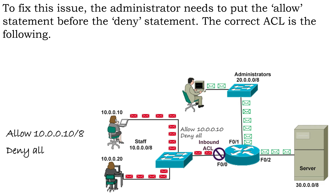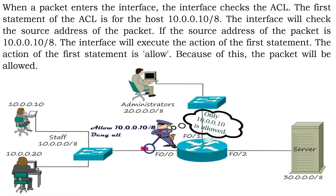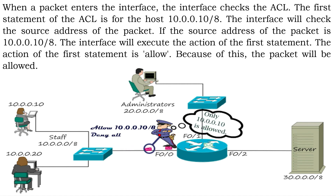To fix this issue, the administrator needs to put the allow statement before the deny statement. The correct ACL is: allow 10.0.0.10, deny all. Now when packets from host 10.0.0.10 enter the F0/0 interface, the interface checks the ACL. The first statement is for host 10.0.0.10. The interface checks the source address of the packet — if it is 10.0.0.10, the interface executes the action of the first statement, which is allow, so the packet is permitted.